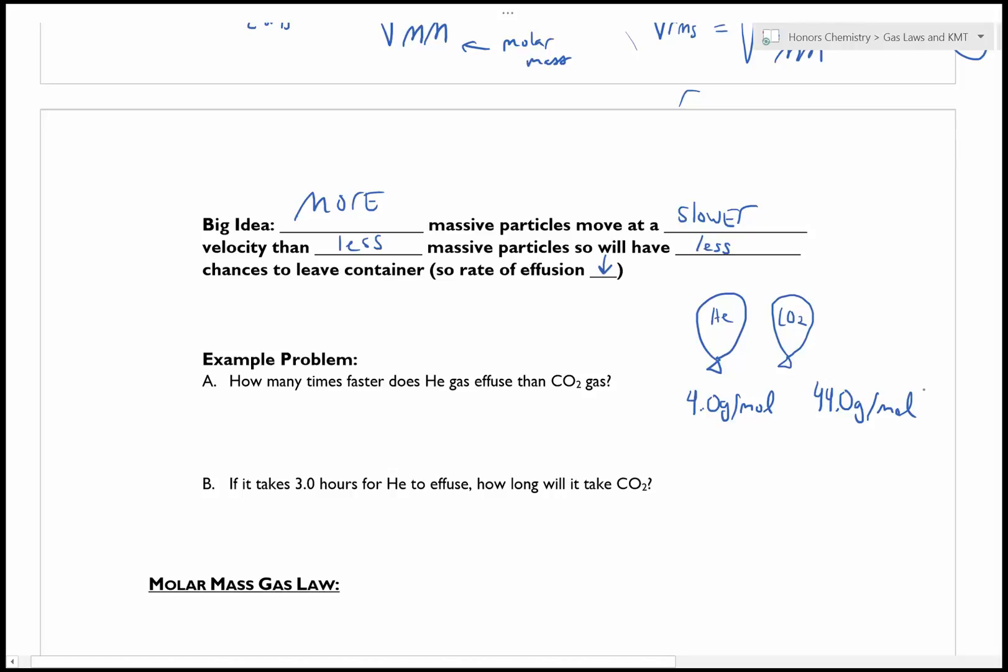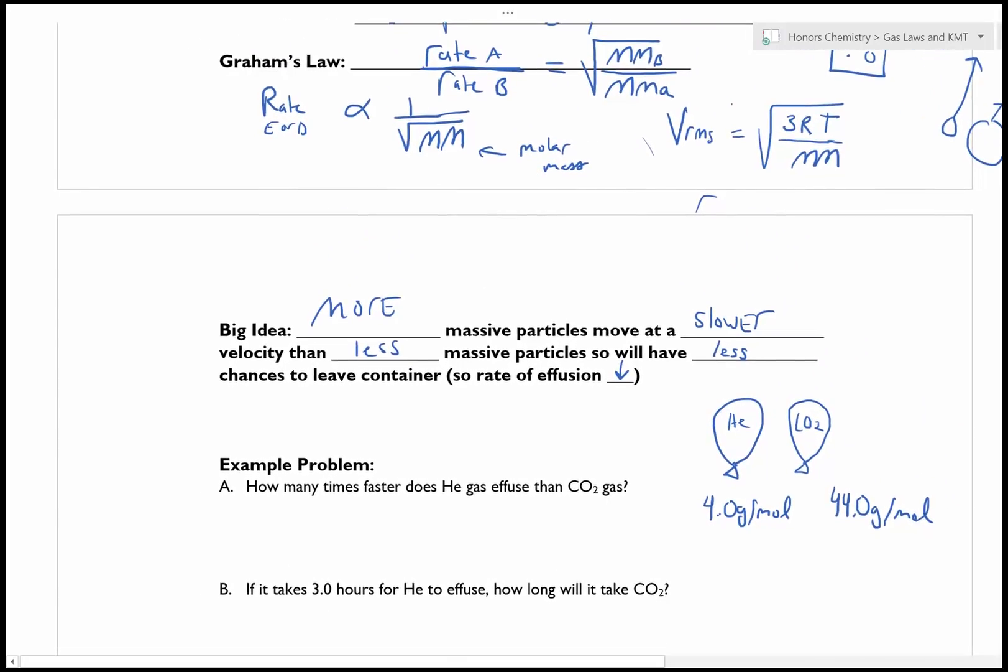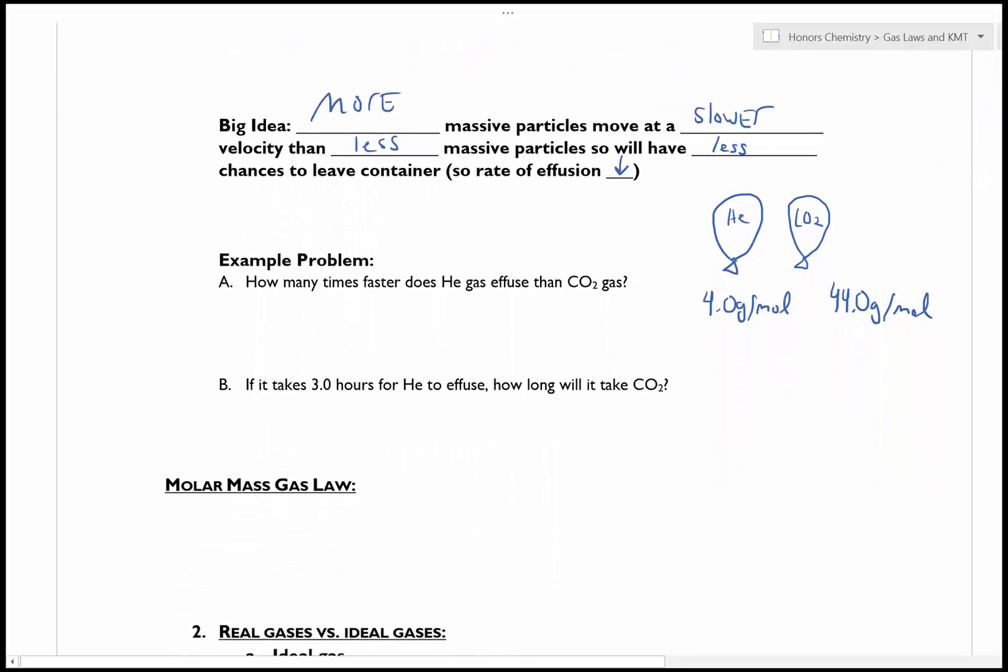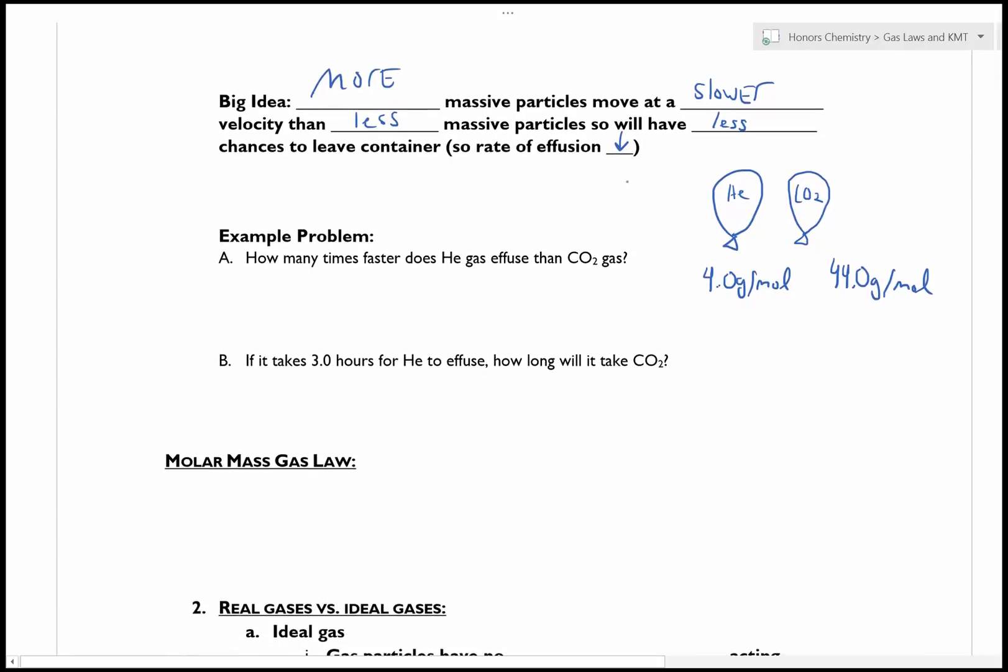So on average, even at some temperature, the particles are going to be moving slower. And the rate is going to be less for effusion and diffusion. So I'm going to use Graham's law to figure out how many times faster does He gas effuse than CO2 gas. So I can go look at my little expression here.